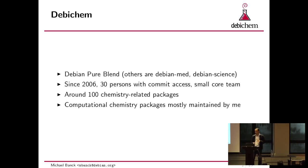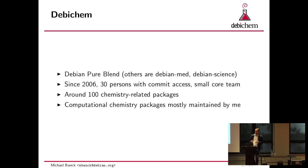Right now we have 30 persons with commit access, but it's mostly a couple of people actually doing a lot of work, and we now have 100 source packages. I've mostly been focusing on computational chemistry — that's the packages I mostly maintain. I haven't actually been employed as a chemist for the last nine years, so this is only a volunteer thing for me, and I guess for most other people, except for Graham Ings who works at the University of South Africa and is actually an administrator at the chemistry department there.